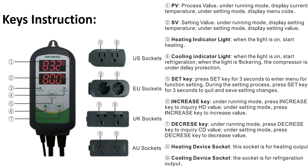This is the SET key. The user has to press the SET key for three seconds to enter the menu for function setting. During the setting process, press the SET key for three seconds to quit and save the setting changes. This is the increase key — under running mode, press the increase key to enquire about the heating differential value; under setting mode, the same key is used for incrementing the value.